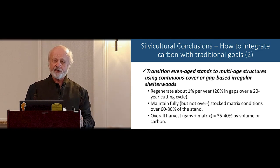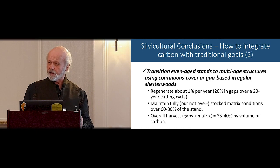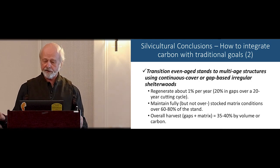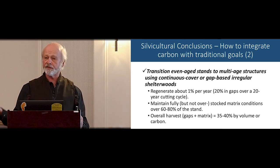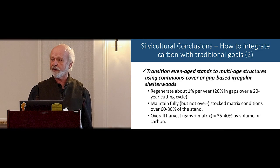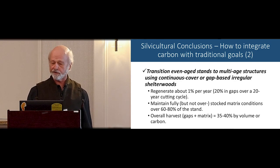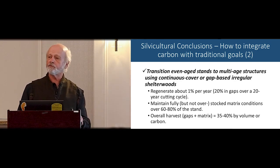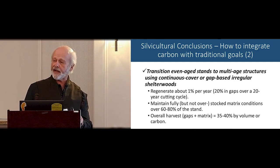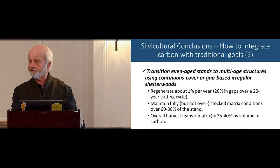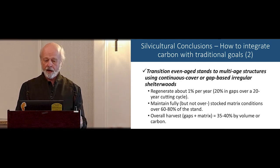My rule is: we regenerate 1% per year. Of course we're not going in every year — multiply the cutting cycle by that one percent and you get the area that you should put in regeneration patches in an entry. For a 15-year cycle, that's 15%. It's simple.